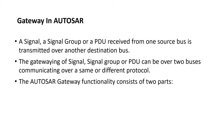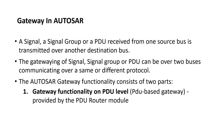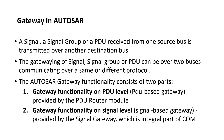The AUTOSAR gateway functionality consists of two parts. One is gateway functionality at the PDU level, which is called PDU-based gateway, provided by the PDU Router module. The other is gateway functionality at the signal level, which is provided by the signal gateway, an internal part of the COM module.